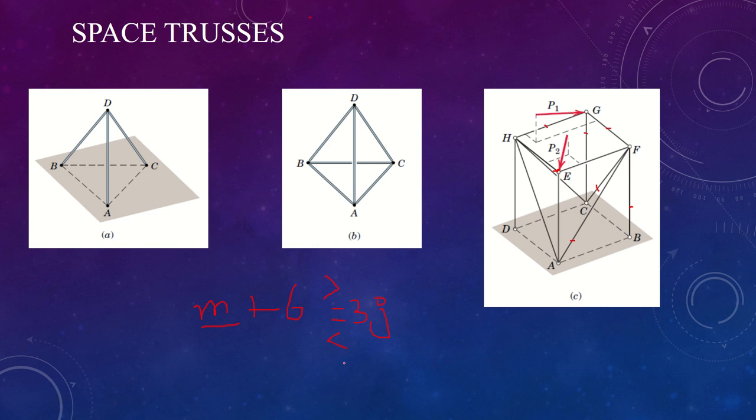If M plus 6 is less than 3J, there is a deficiency of internal members and the truss is unstable and subject to collapse under any loading. The relationship between the number of joints and number of members is very helpful in preliminary design of a stable space truss, since the configuration is not as obvious as with the plane truss where the geometry of statically determinate systems is generally quite apparent in two-dimensional systems.